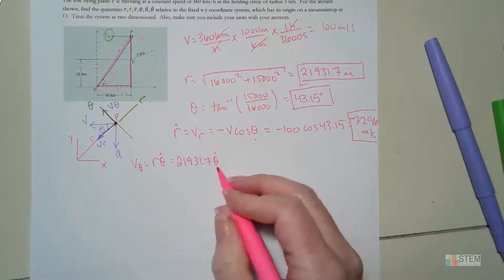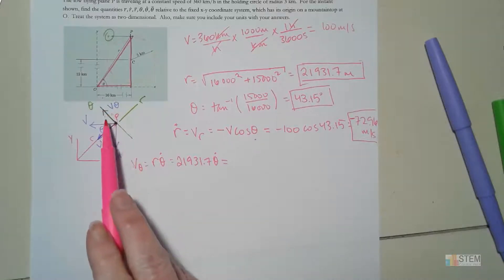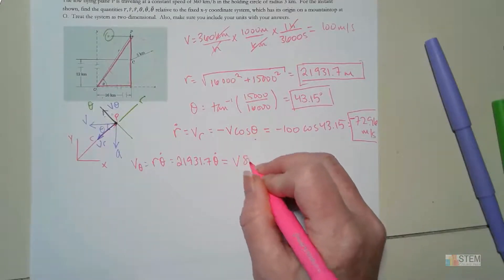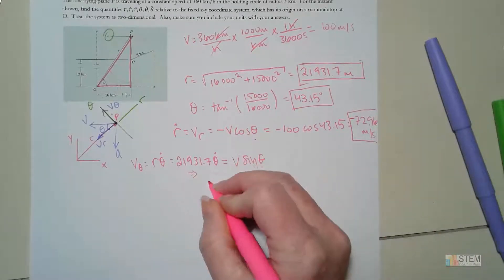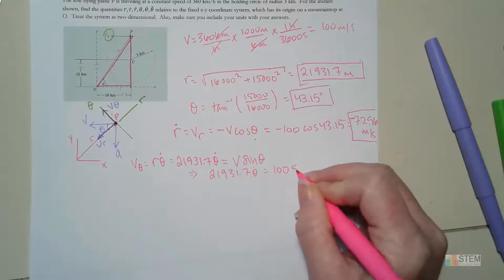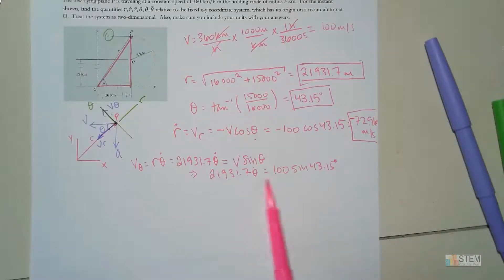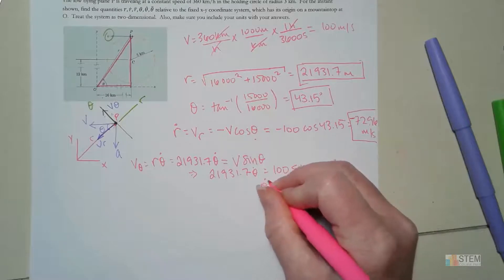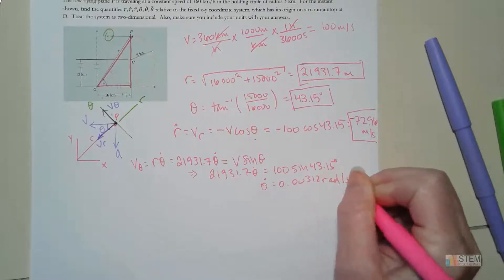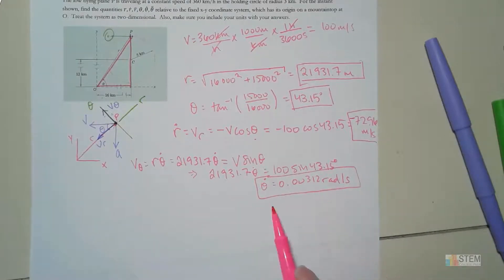We also know that V_θ = V sinθ, so: 21,931.7 · θ̇ = 100 sin(43.15°). The only unknown is θ̇, so solving gives θ̇ = 0.00312 radians per second. Unless told otherwise, you can always use radians per second as the unit for θ̇.